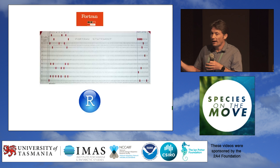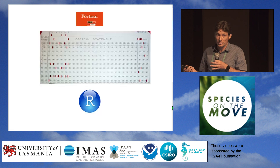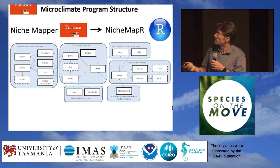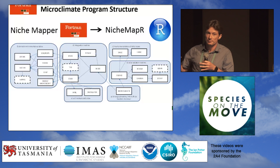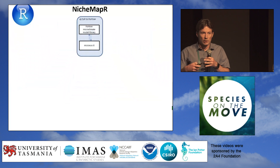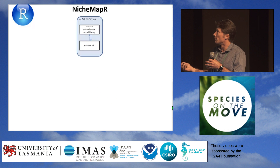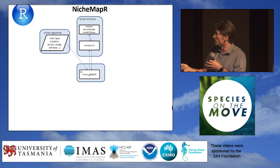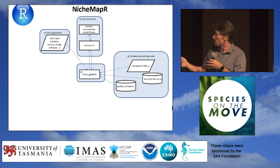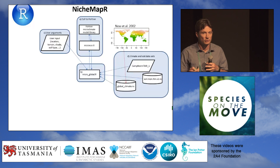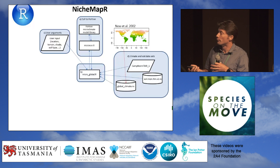It turns out that R, which is the language of ecologists now, can call Fortran — and it also has really nice ways of documenting programs and providing help files. So what I've done is taken the NicheMapper Fortran programs and had them called by the NicheMapper R package. In R, you write wrapper scripts that interact with the Fortran code. There's one for the microclimate model called micro_global, into which you put settings for how you want the model to run and your location, and it queries a bundled global climate database for that location so you can get started straight away.